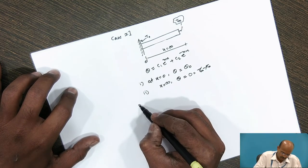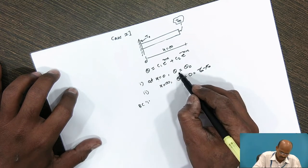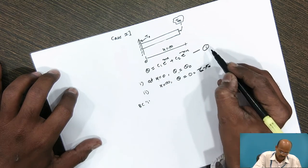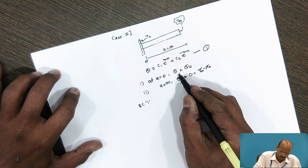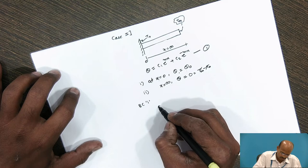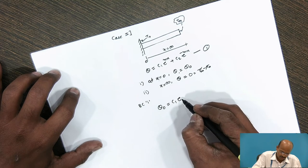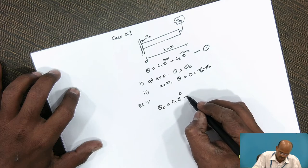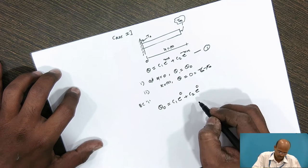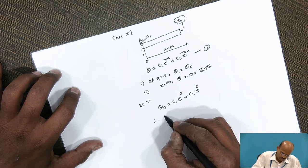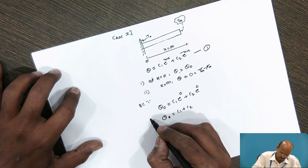Using the first boundary condition, we substitute these values into the general heat conduction equation. At x = 0, θ = θ₀, so this becomes θ₀ = C₁·e^0 + C₂·e^0, which gives θ₀ = C₁ + C₂.